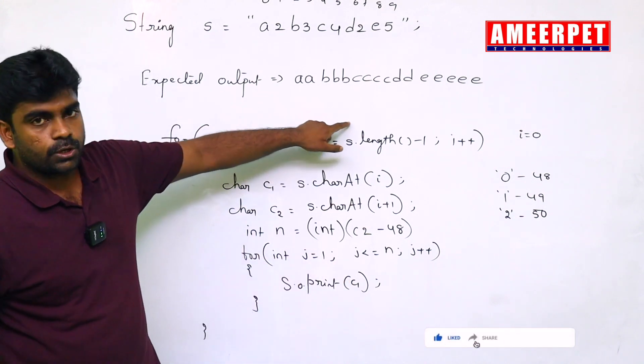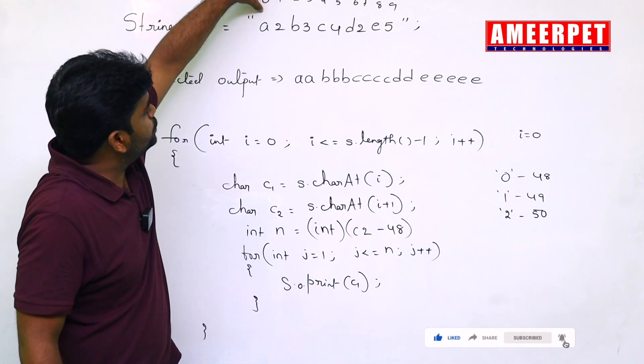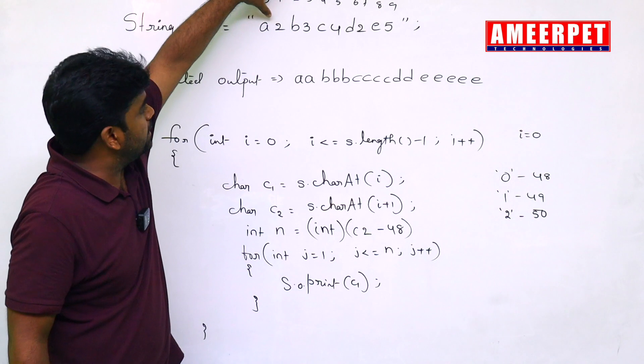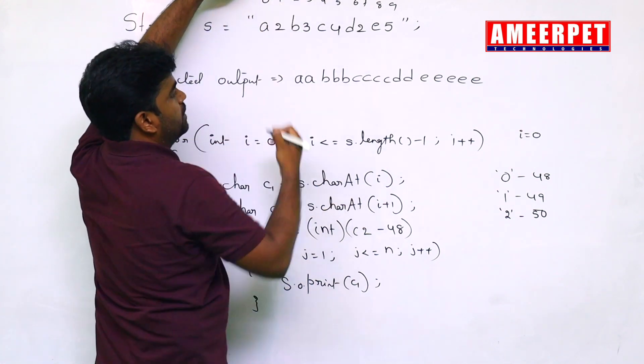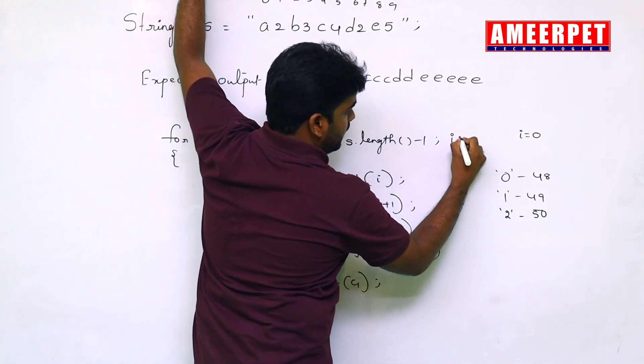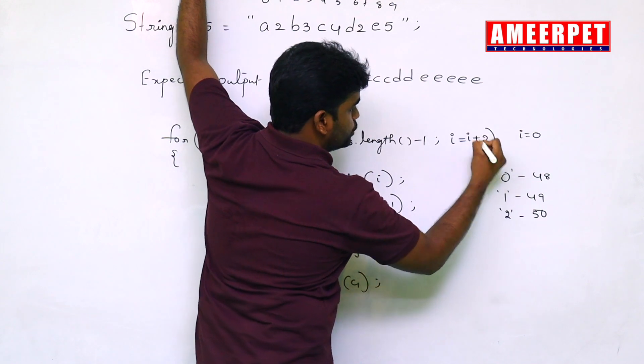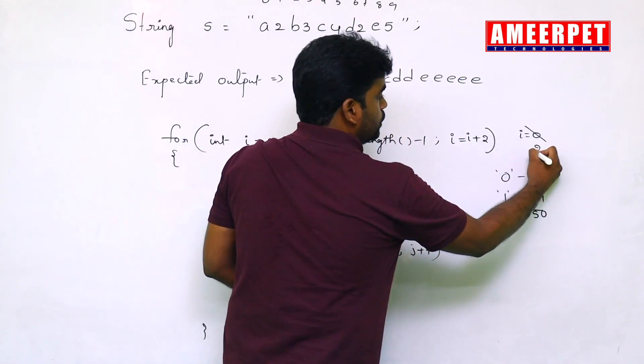After that, again it will go to outer loop. Now, the question is, next one, we should not move to this one cursor. Directly we should move to this one. So, don't write i plus plus. Simply you can write i is equal to i plus 2. i value 0 become what? 2.